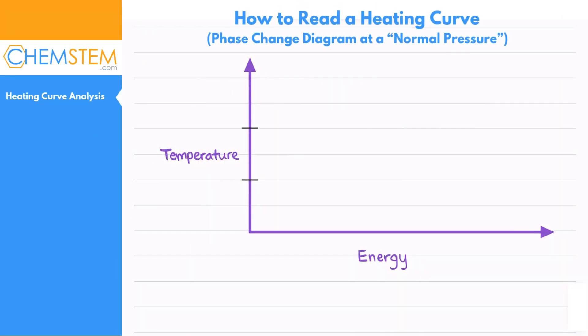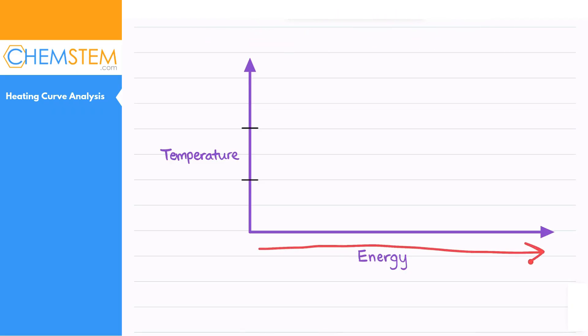Here's how you read and construct a phase change diagram. We have energy on the x-axis, which basically tells us that as we add more and more energy we're moving more to the right. This is the first quadrant if you're thinking about algebra.